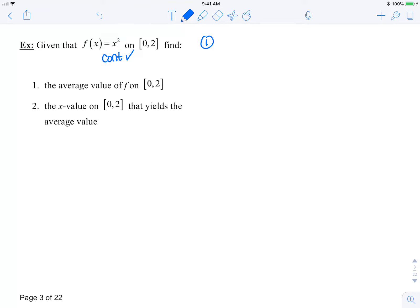For the first part, f_av equals 1 over 2 minus 0, integral from 0 to 2, of x-squared dx. So our average value is one-half times one-third x-cubed from 0 to 2. So f_av is one-sixth multiplied by 8, which is four-thirds.